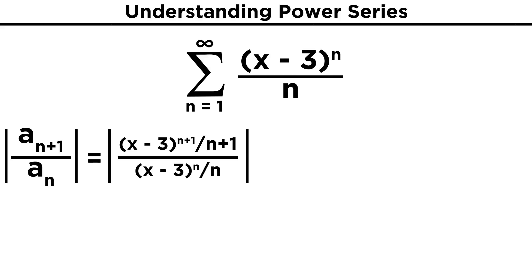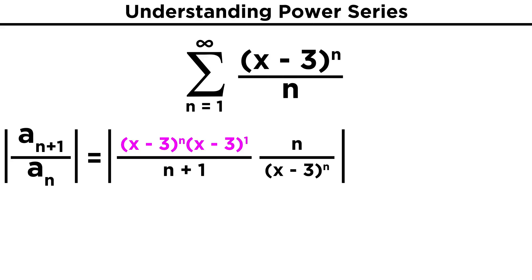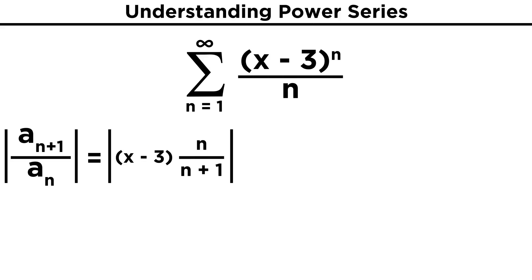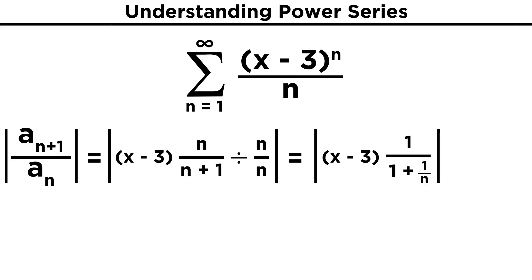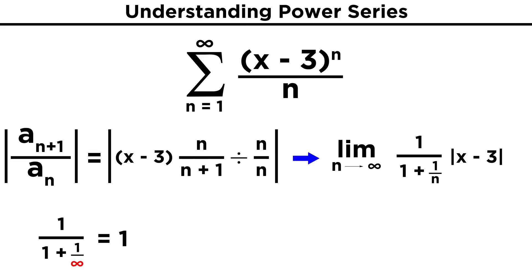Remembering the ratio test from the previous tutorial, let's change n into n plus one, and then take the regular version and flip it to bring it up here. To simplify, raised to the n plus one can become raised to the n times raised to the one. This more complicated term then cancels, leaving us with the product. Now let's divide this fraction by n to get one over the quantity. As these are all positive, we can pull them out of the absolute value brackets, leaving just the variable in there. Now bringing n up to infinity, this whole part just becomes one, leaving us with the absolute value of x minus a.